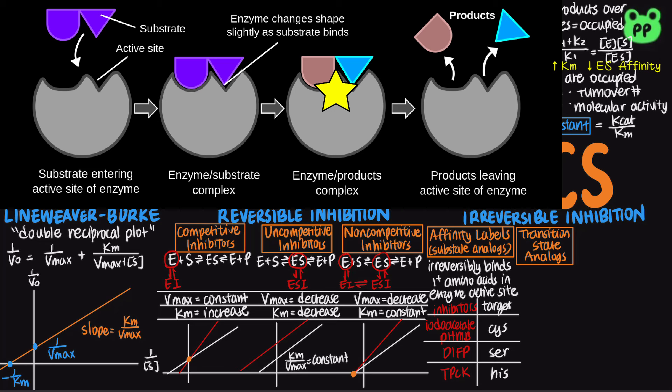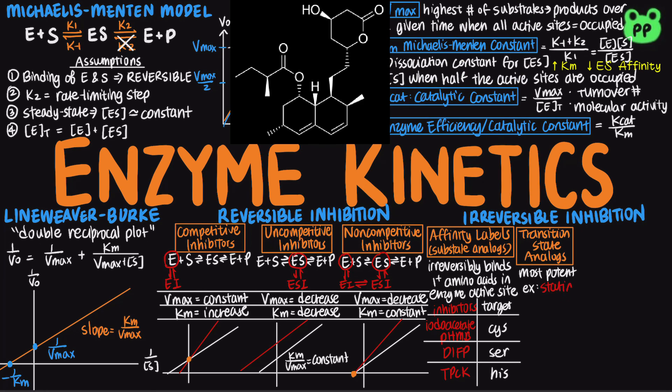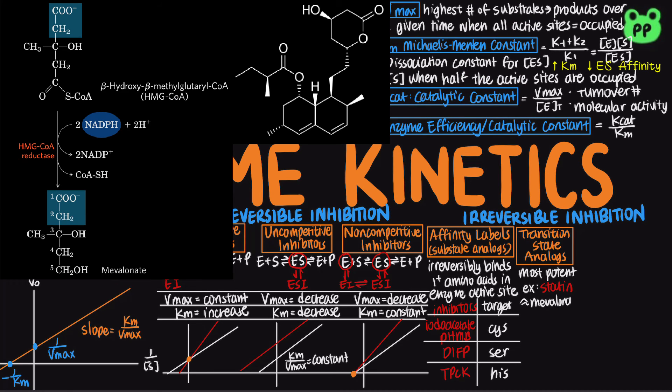Therefore, transition-state analogs are the most potent enzyme inhibitors and are targets for drug designs. For example, statin is the transition-state analog of HMG-CoA reductase, the key step to cholesterol biosynthesis. Therefore, statin effectively treats high cholesterol.